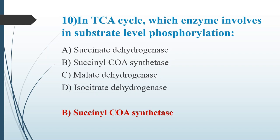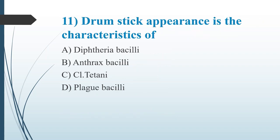Eleventh question: Drumstick appearance is the characteristic of which organism? Option A: Diphtheria bacillus. Option B: Anthrax bacillus. Option C: Clostridium tetani. Option D: Plague bacillus. The answer is Option C, Clostridium tetani. Diphtheria bacillus is seen as a Chinese letter pattern or cuneiform arrangement. Anthrax bacillus is seen as bamboo stick appearance. Plague, caused by Yersinia, is seen as safety pin or bipolar appearance.